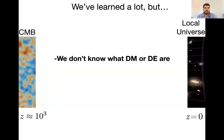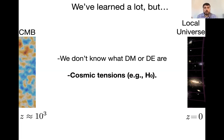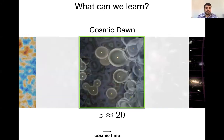Despite everything we've learned, we still don't know what dark matter or dark energy are. These two sides are often in disagreement. The most famous disagreement is the H0 tension, where H0 measures the expansion rate of the universe. When you measure in the local universe using supernovae and Cepheids, and when you measure in the CMB using the standard ruler, you get values that are four sigma off — a very large tension. What I'm going to tell you today is how to use the era in between, this Cosmic Dawn, to learn about cosmology and bridge the gap between these two sides.